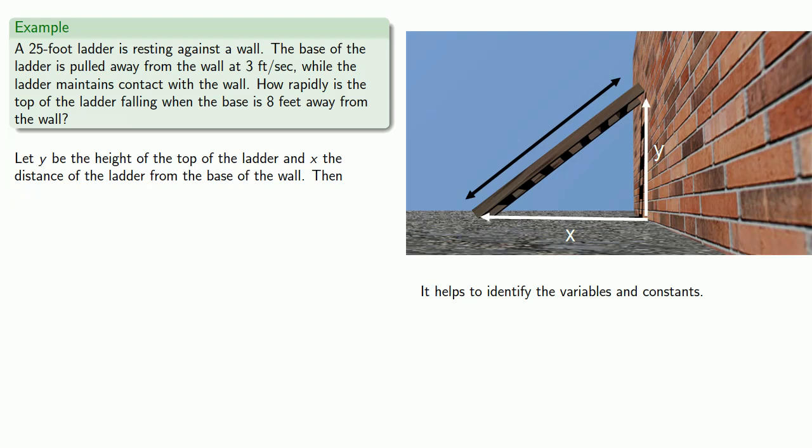Well, notice that the length of the ladder doesn't change and that x, y, and the ladder itself form three sides of a right triangle. And that means the Pythagorean Theorem tells us that x squared plus y squared equals 25 squared.